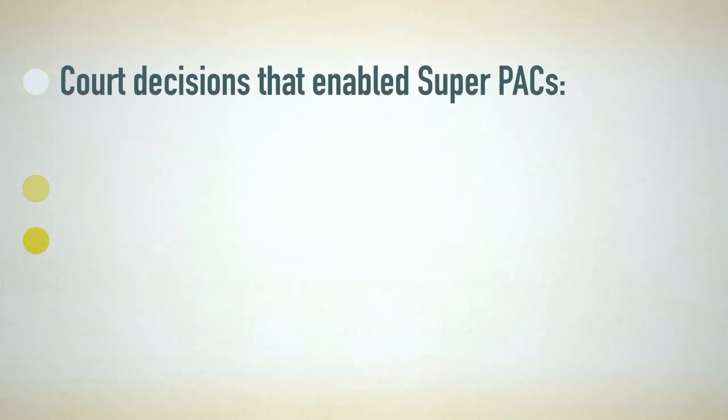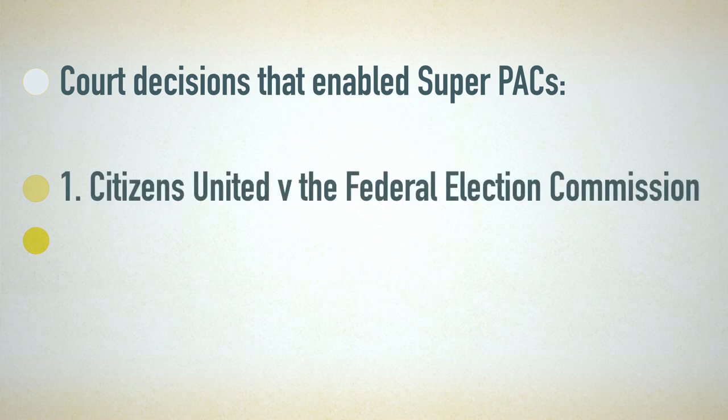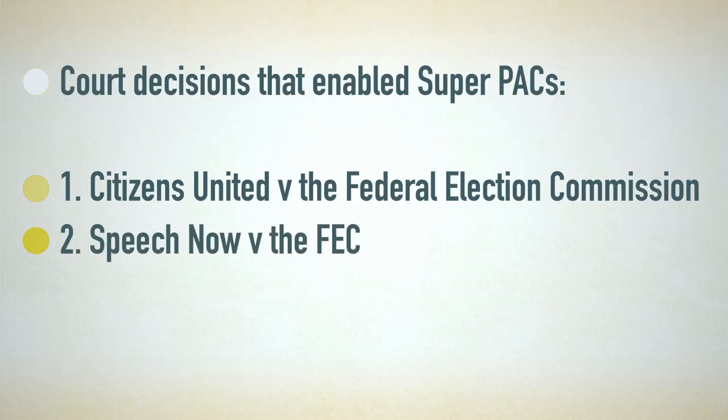First, there was a Supreme Court Citizens United versus Federal Election Commission ruling, which made it easier for corporations and unions to directly influence elections by allowing them to make independent expenditures to advocate for or against candidates. Then a lower court decided in a ruling called SpeechNow versus the FEC that there's no reason to limit the amount of money donors, any person, corporation, or union can give to these political action committees that we now call Super PACs.